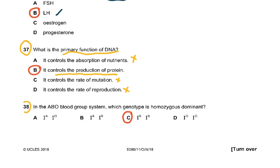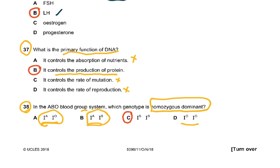Question 38: In the ABO blood group system, which genotype is homozygous dominant? IAIO is heterozygous, IAIB is heterozygous, IOIO is homozygous recessive. The only homozygous dominant genotype is IBIB, which corresponds to blood group B. So that was the correct answer.